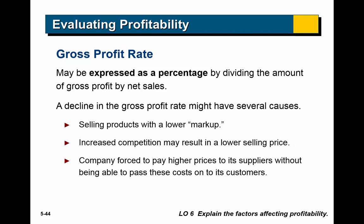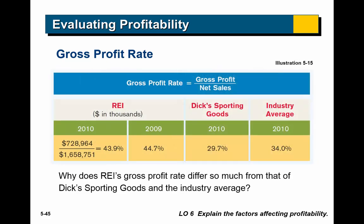A couple of ways to evaluate profitability. The first is the gross profit rate: take gross profit, divide by net sales, and that expresses gross profit as a percentage of sales. Using REI, Dick's Sporting Goods, and the industry average as examples — REI has a much higher gross profit percentage than Dick's or the industry average, meaning somehow they're keeping their cost of goods sold low, giving them a higher gross profit rate.